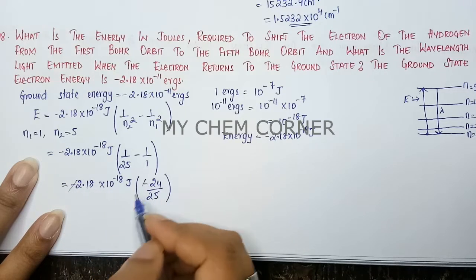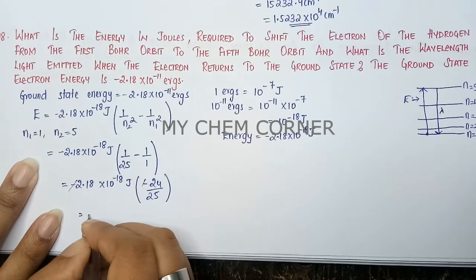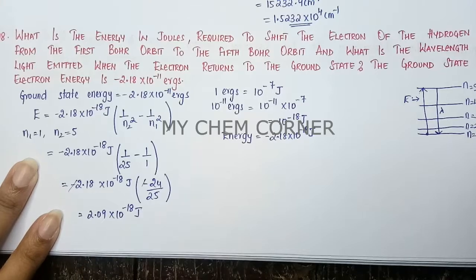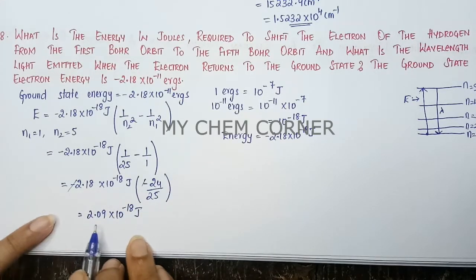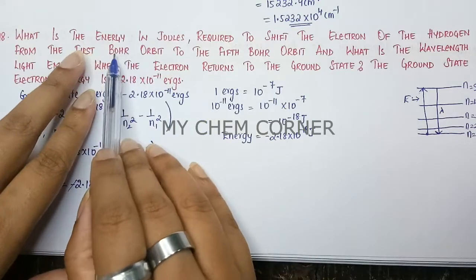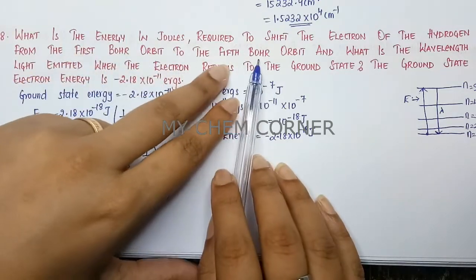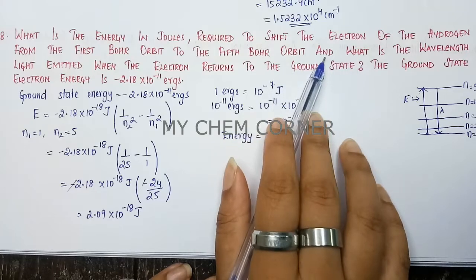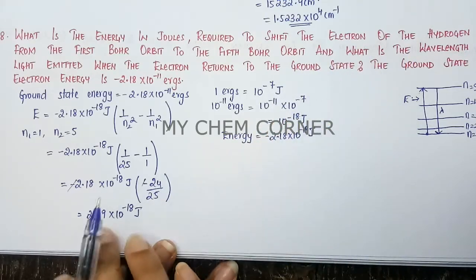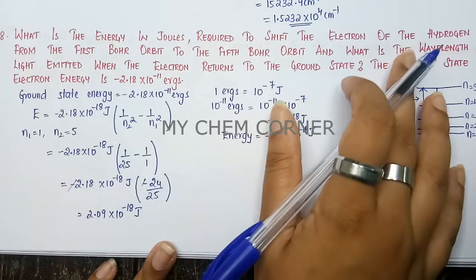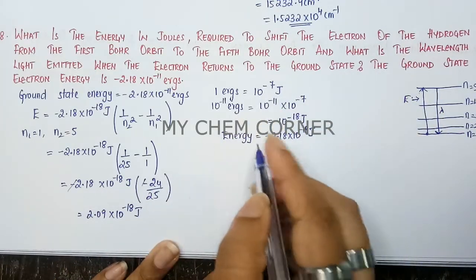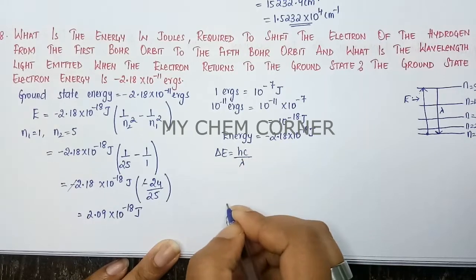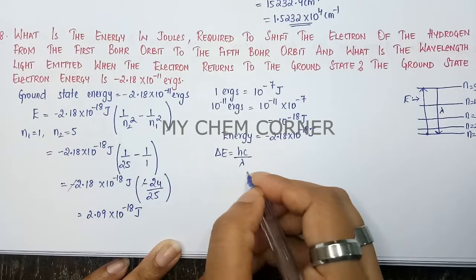The two negatives cancel, and when we simplify we get 2.09 × 10⁻¹⁸ joules. This is the energy required for the electron to move from the first to the fifth Bohr orbit. For the second part — finding the wavelength of light emitted when the electron returns to the ground state — we use the relation ΔE = hc/λ, where h is Planck's constant.